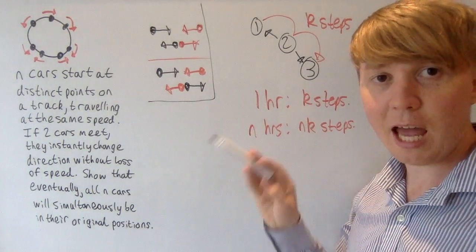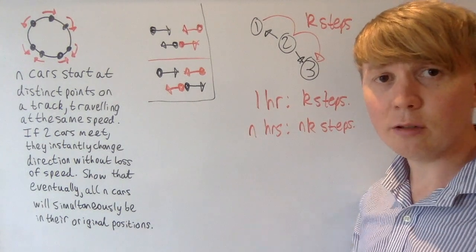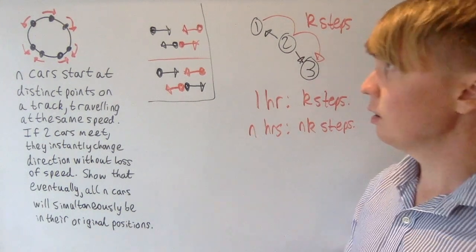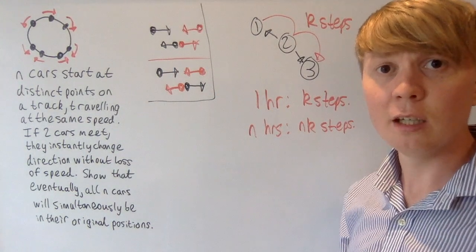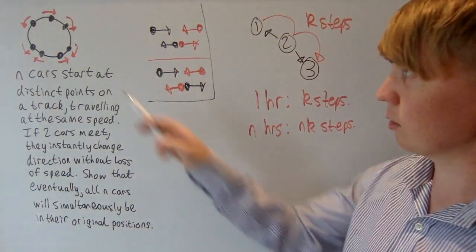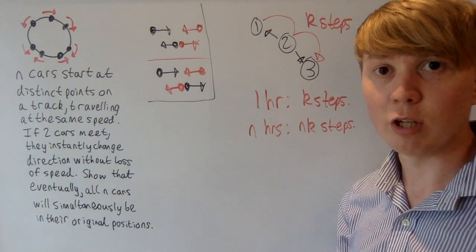that if we were to go around for n hours now, say if it takes one hour to go all the way around, we do this n hours now. Using this idea of the cars passing through each other, you can see that we go to a different configuration each time, but then eventually we will reach a point where every single car is back in its original position.